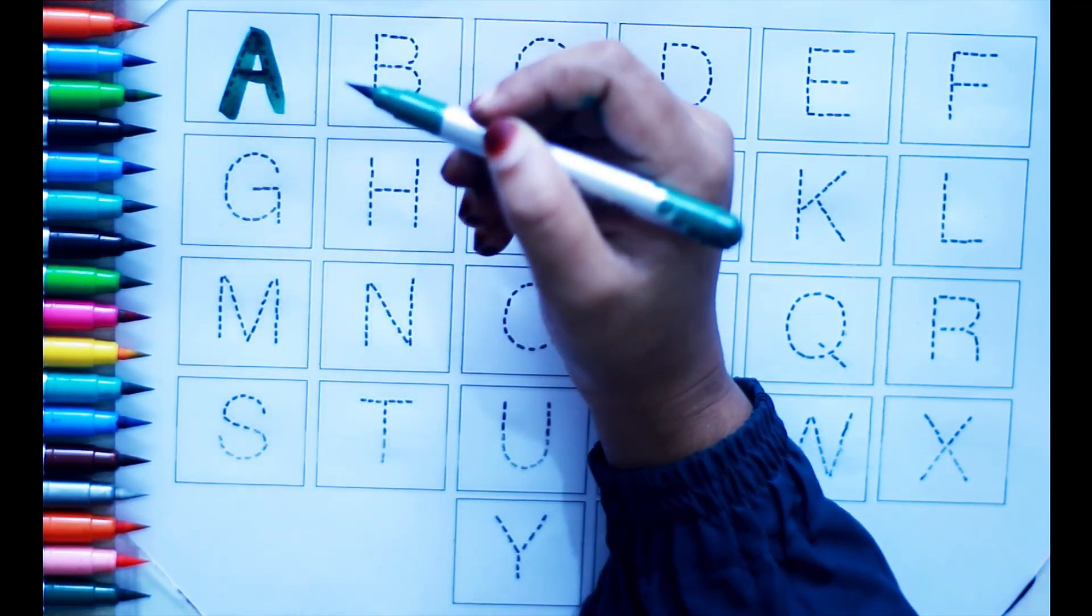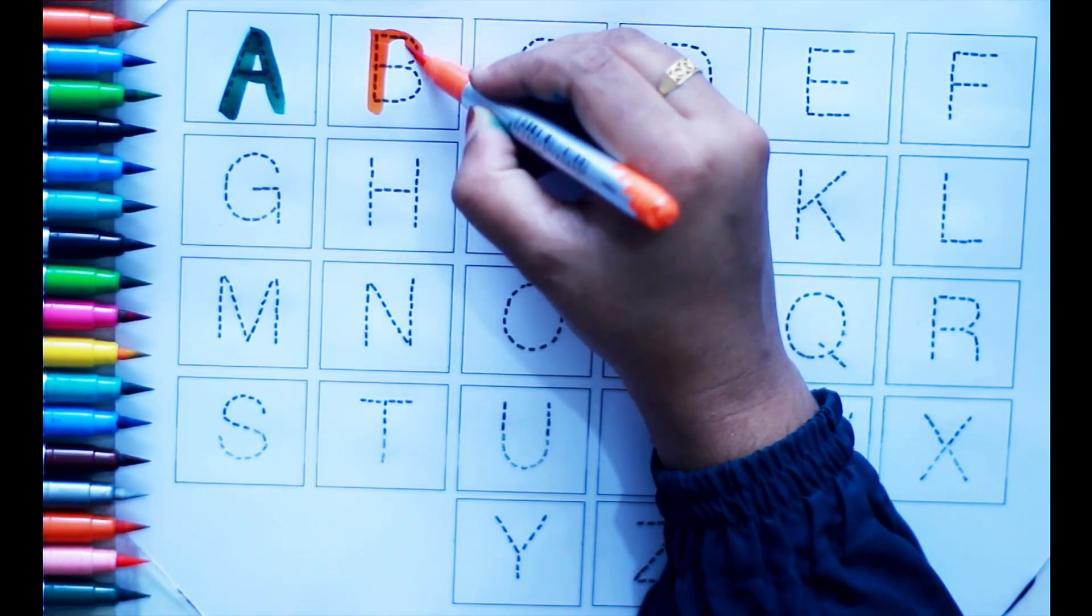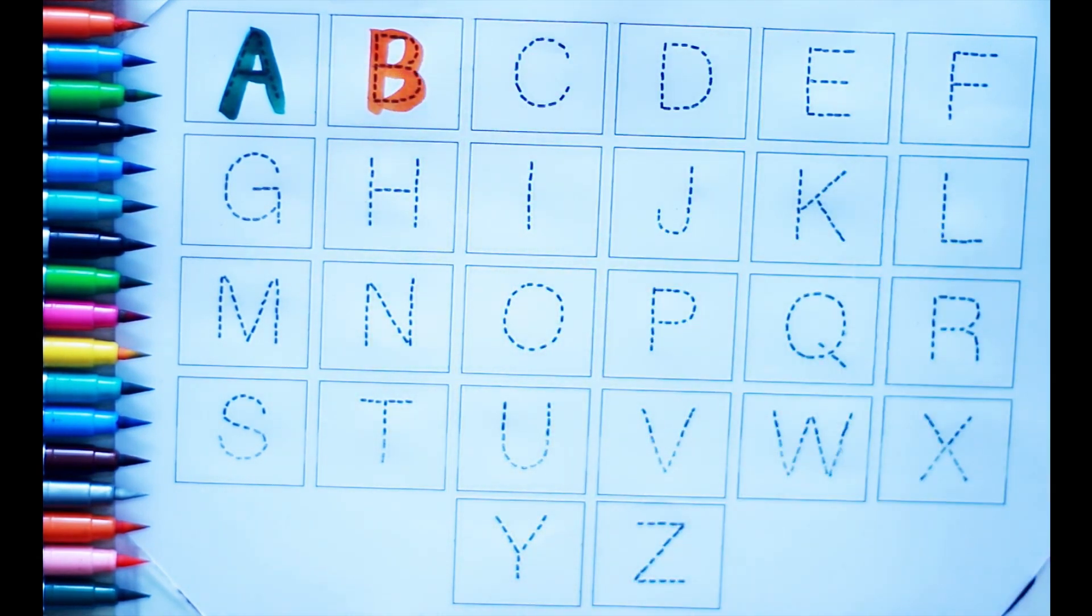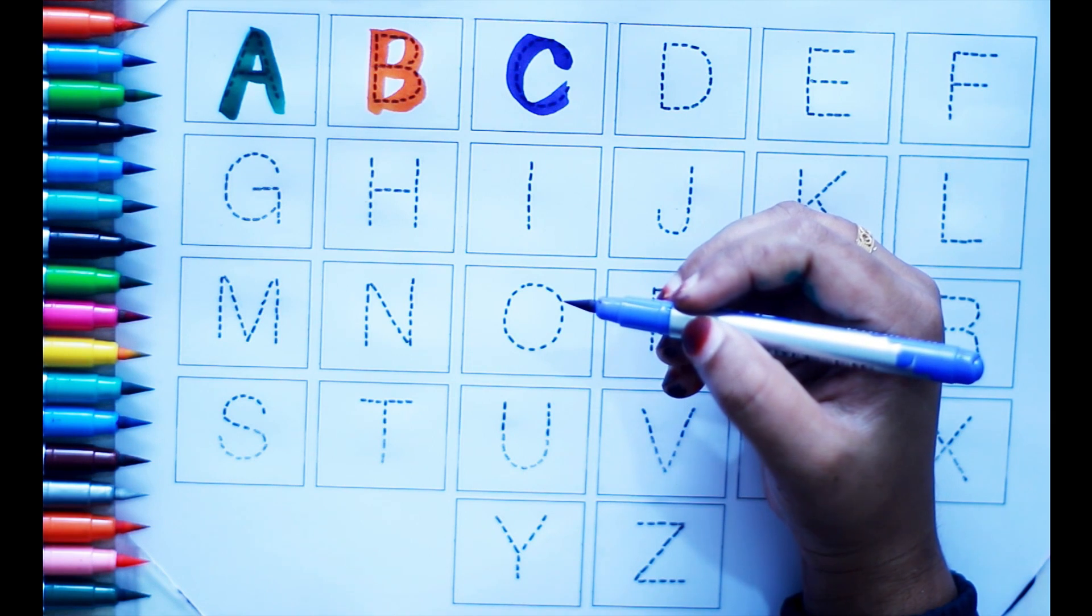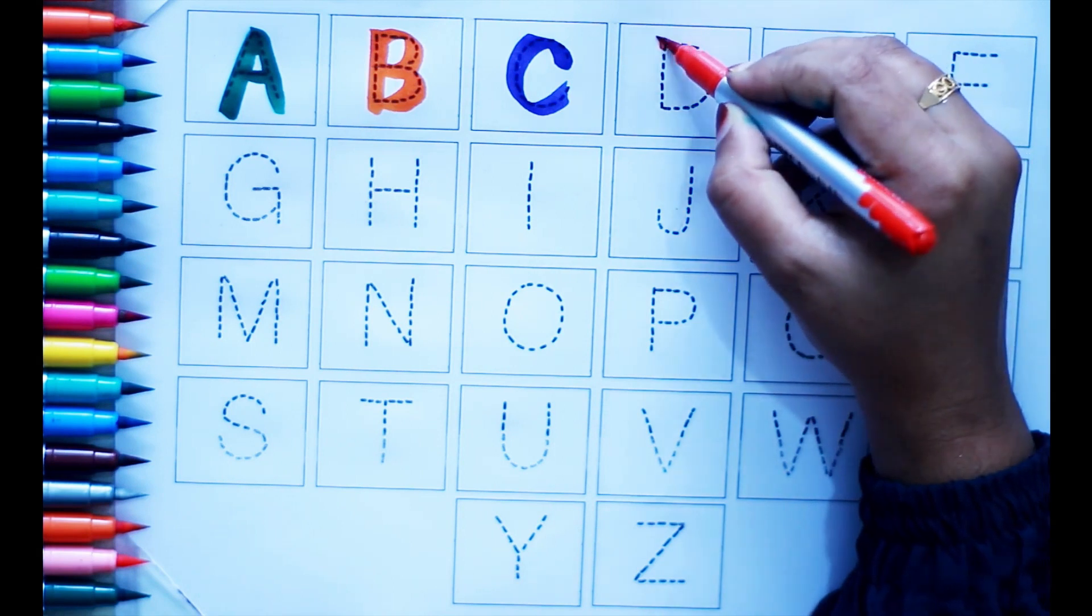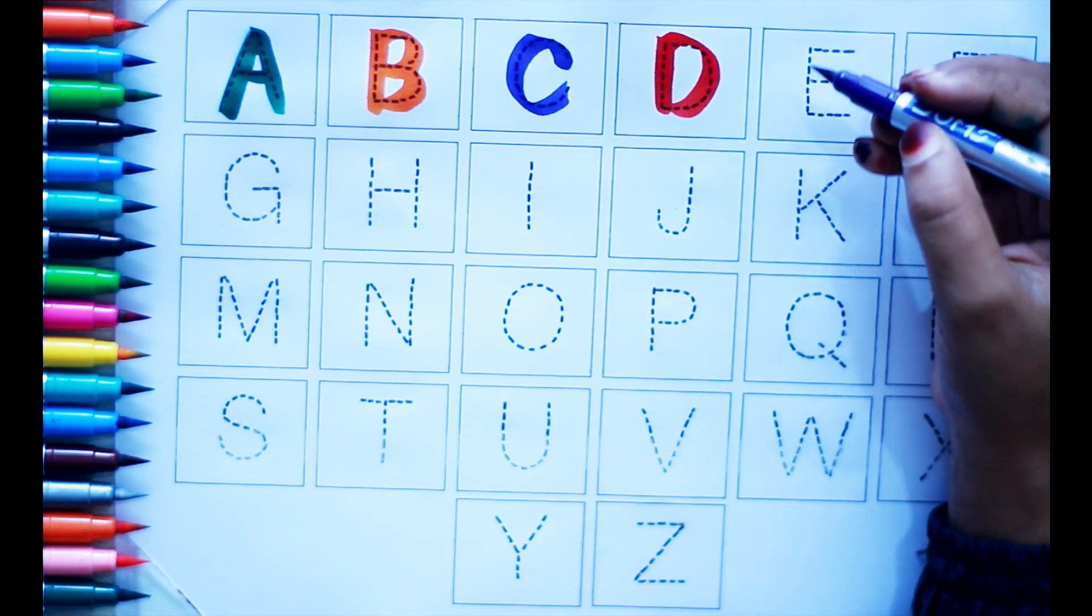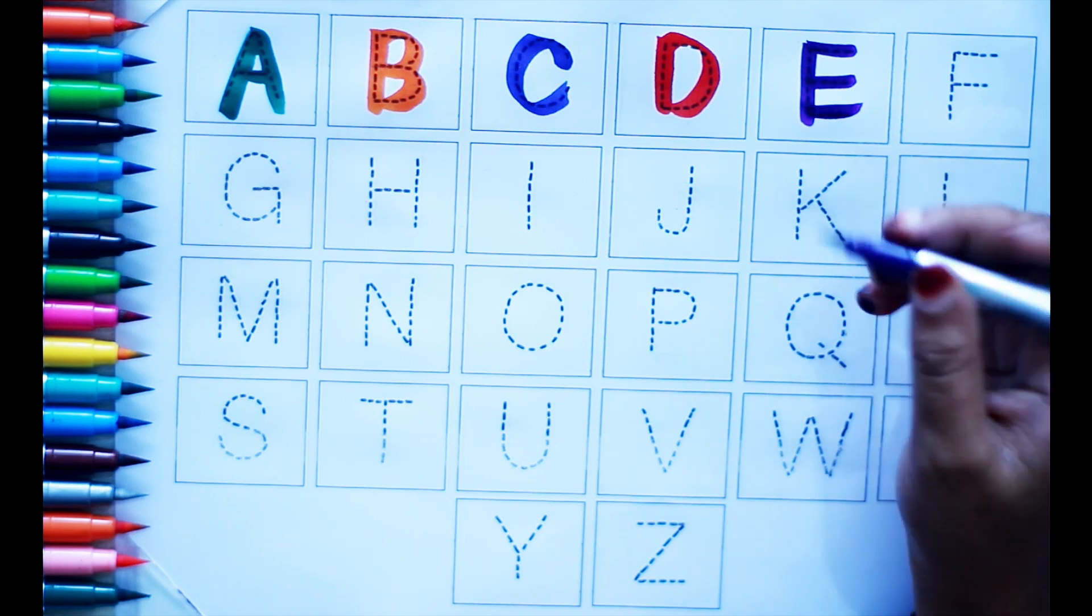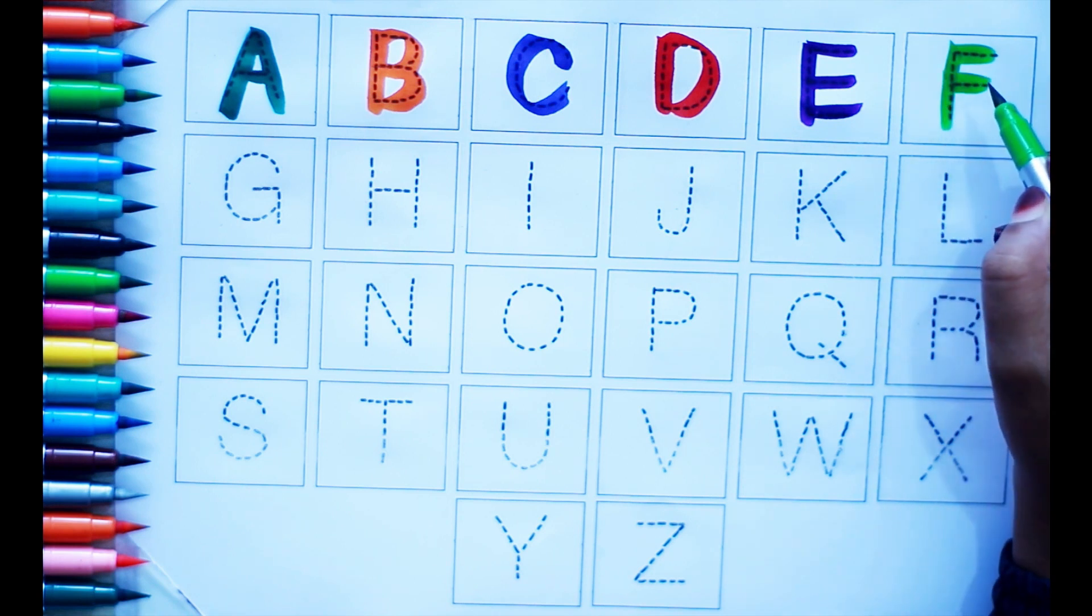Green color A, A for airplane. Orange color B, B for bat. Blue color C, C for cat. Red color D, D for doll. Violet color E, E for egg. Light green color F, F for flower.